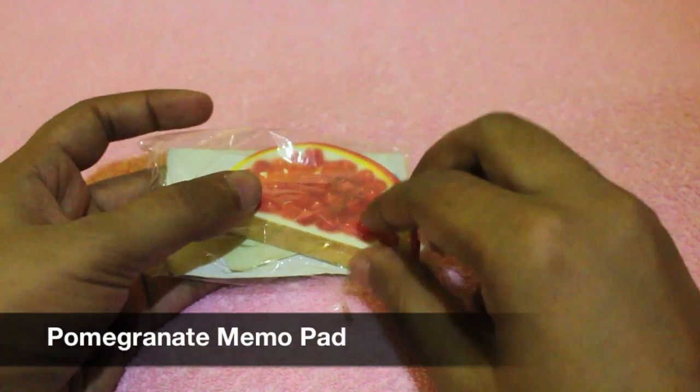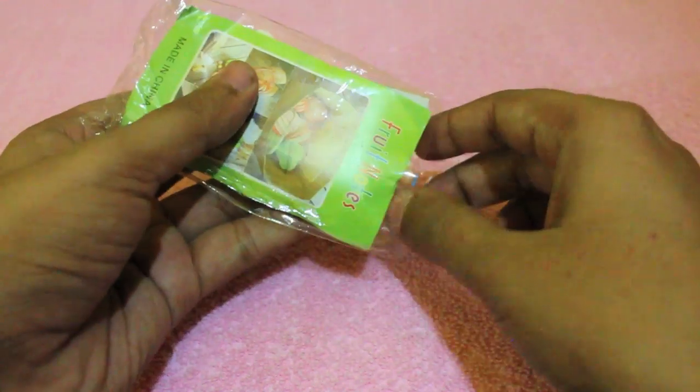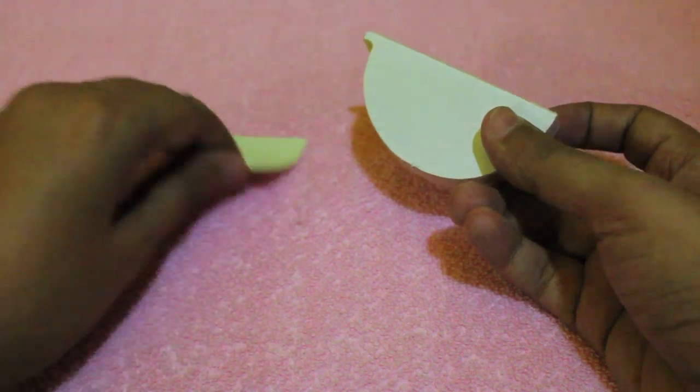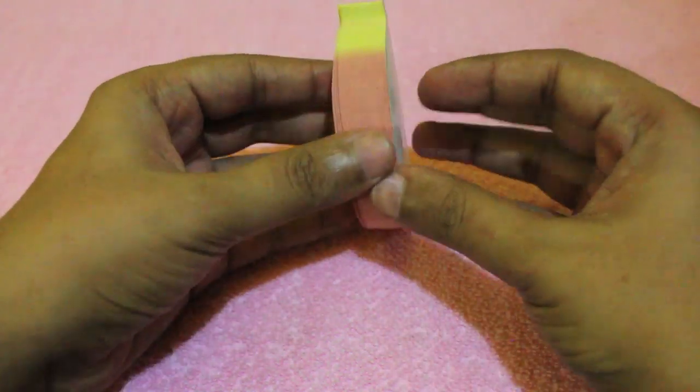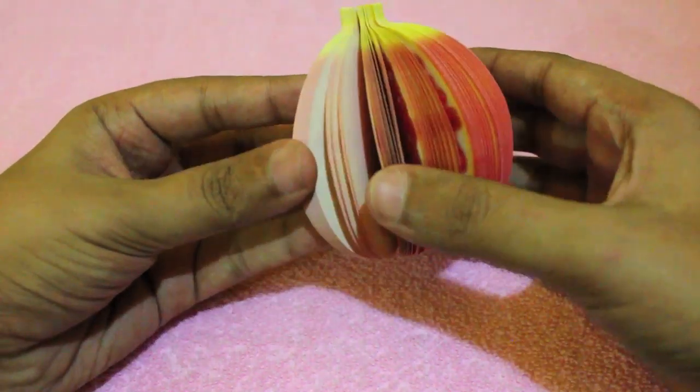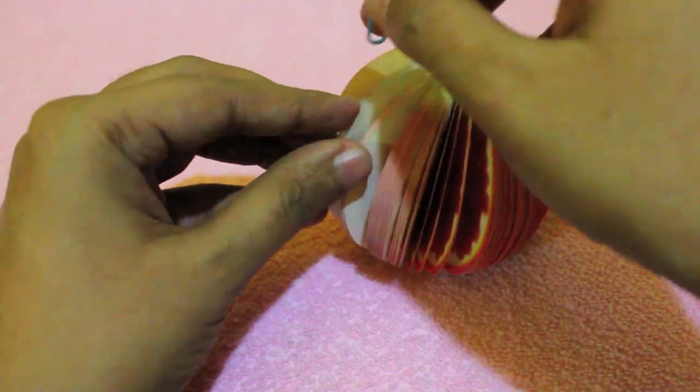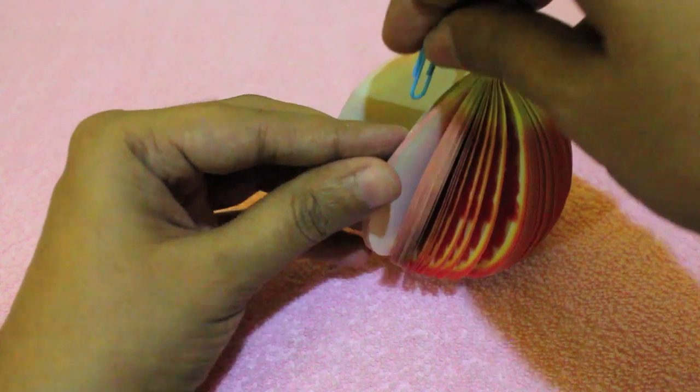Hello guys, let's take a look at pomegranate memo pads. These are memo pads made to look like pomegranates. Once you open it up fully, you get a nice-looking pomegranate. It comes with a clip to pin it in place and keep that shape intact.